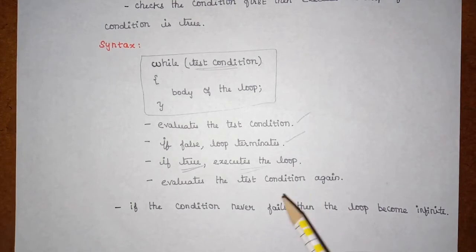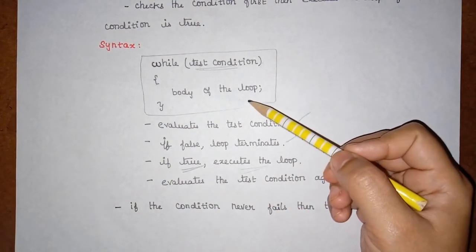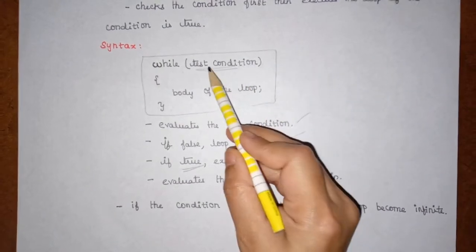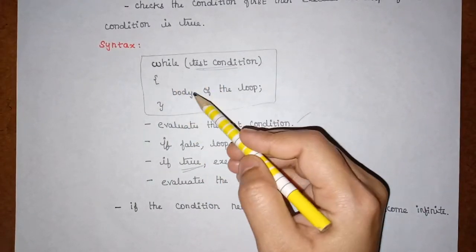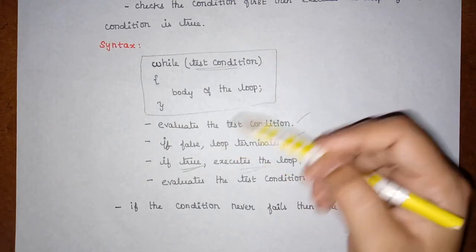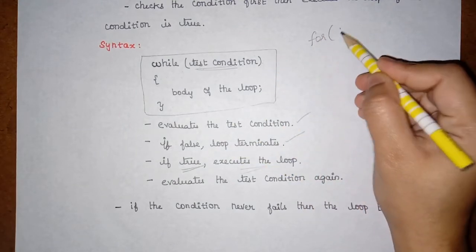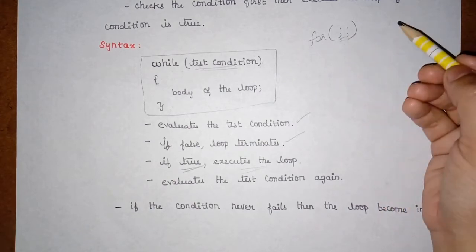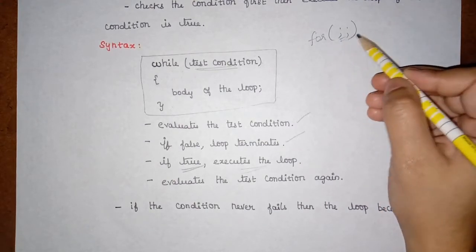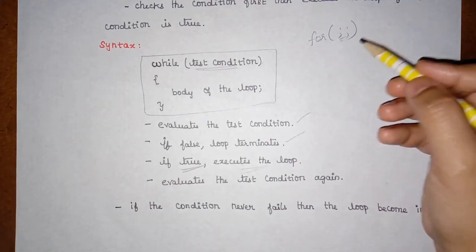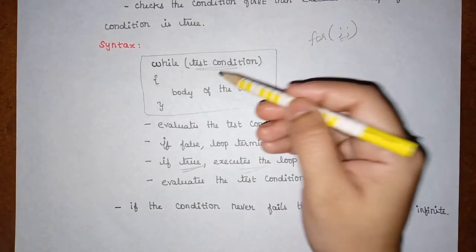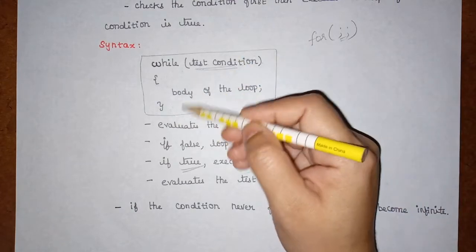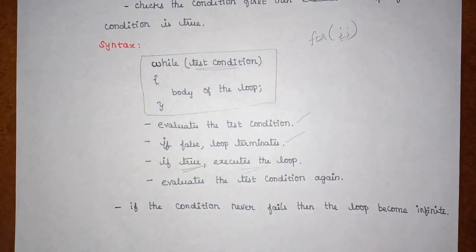One important note to keep in mind when writing a while loop: if the test condition never becomes false, the while loop will get executed infinite times. Just as in a for loop where not specifying a count causes infinite execution, if the condition in a while loop never fails, the loop will execute infinitely.